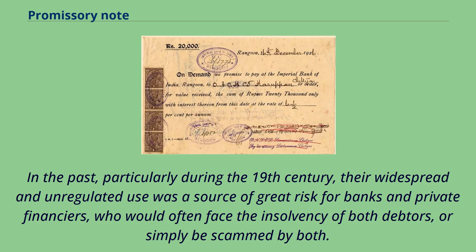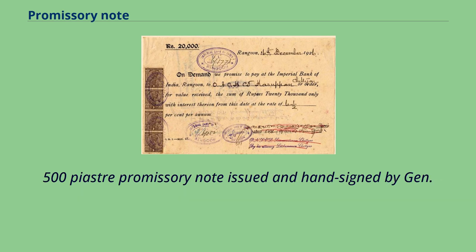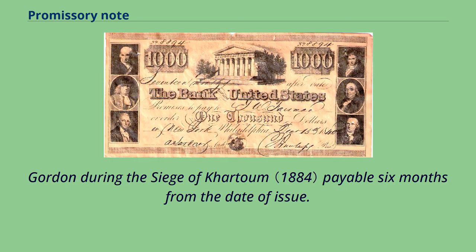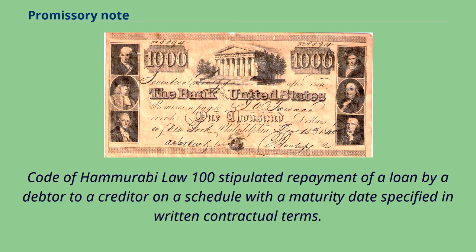In the past, particularly during the 19th century, their widespread and unregulated use was a source of great risk for banks and private financiers, who would often face the insolvency of both debtors, or simply be scammed by both. Code of Hammurabi Law 100 stipulated repayment of a loan by a debtor to a creditor on a schedule with a maturity date specified in written contractual terms.